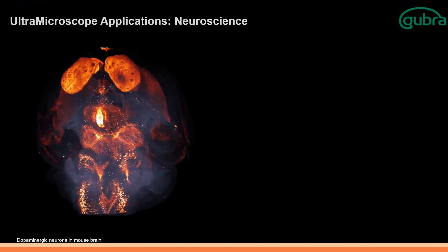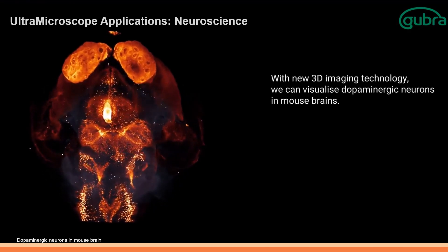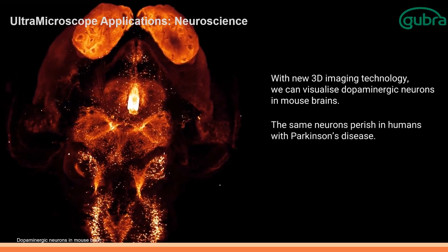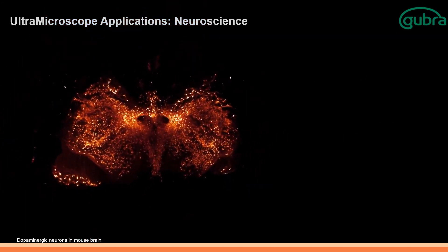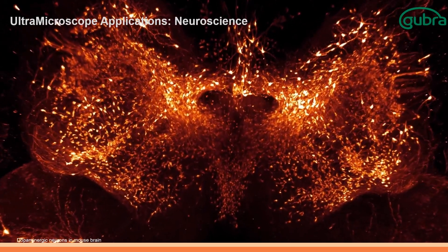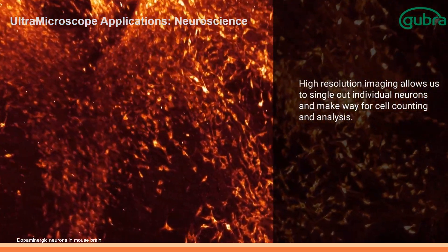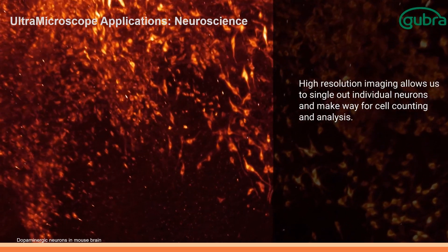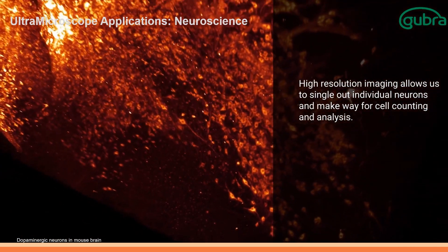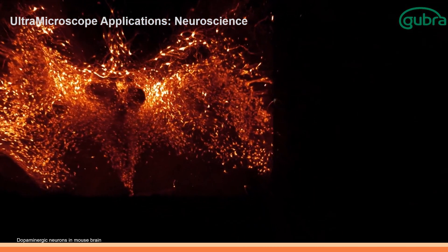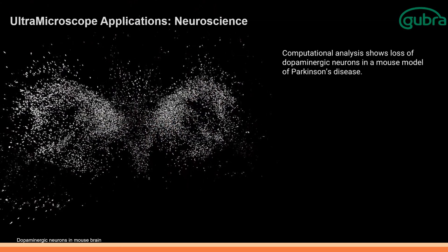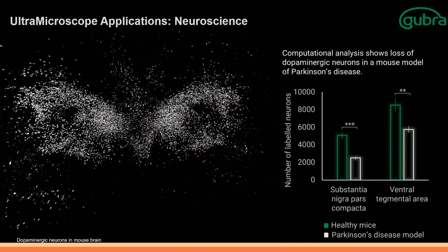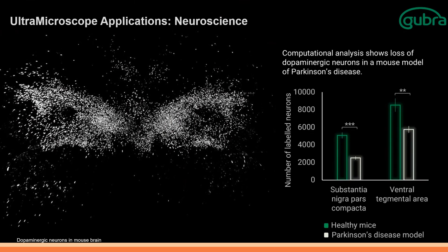Our Ultra Microscope has been widely adopted for various research fields and has been featured in over 800 publications to date, with the number growing steadily. One exceptional example comes from Gubra, where the Ultra Microscope enabled imaging of dopaminergic neurons in the mouse brain. This work holds significant relevance, as dopaminergic neurons are affected in humans with Parkinson's disease. The 3D imaging allows for identification of individual neurons, cell counting, and detailed analysis — including visualization of the loss of dopaminergic neurons in a mouse model of Parkinson's disease, providing valuable insights into disease progression and potential treatment strategies.